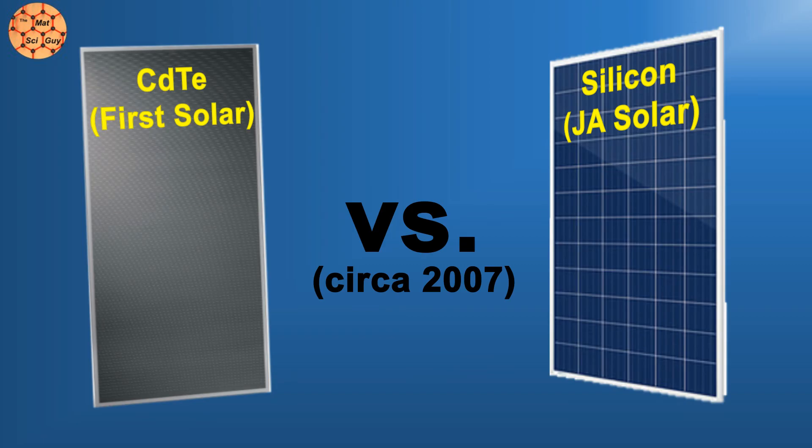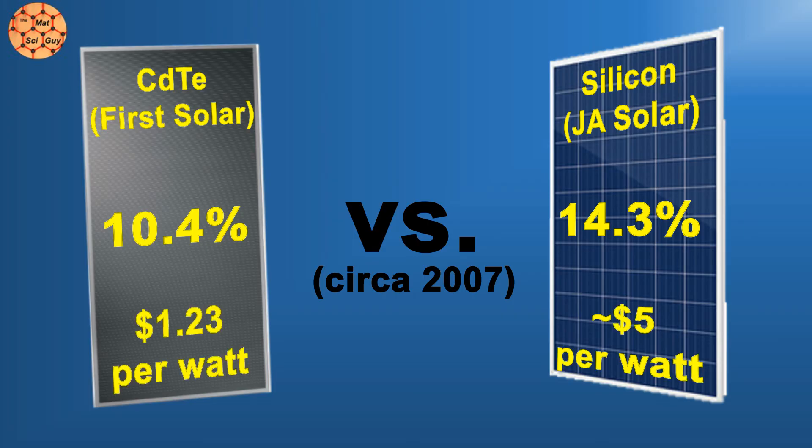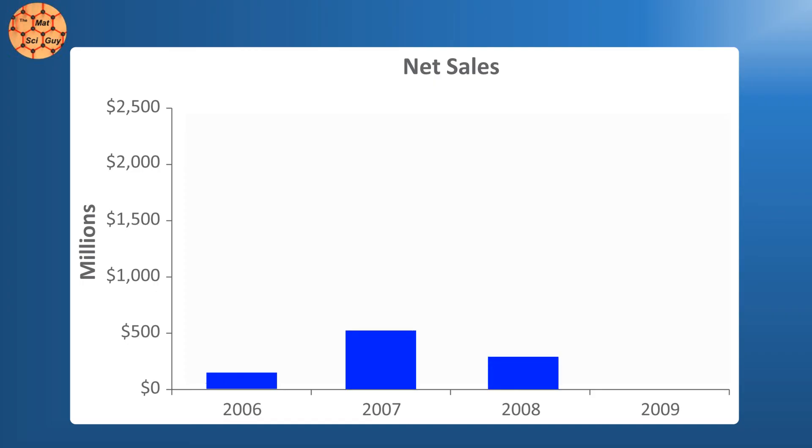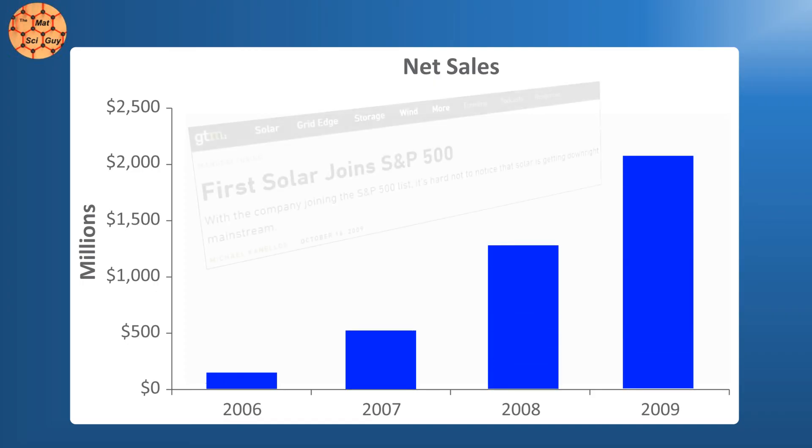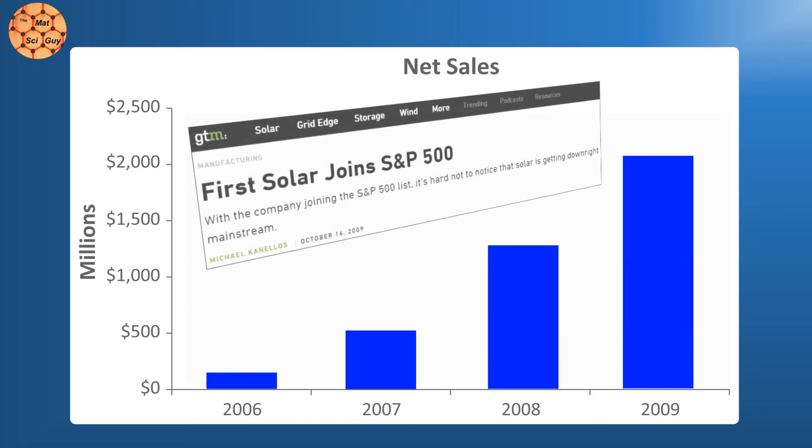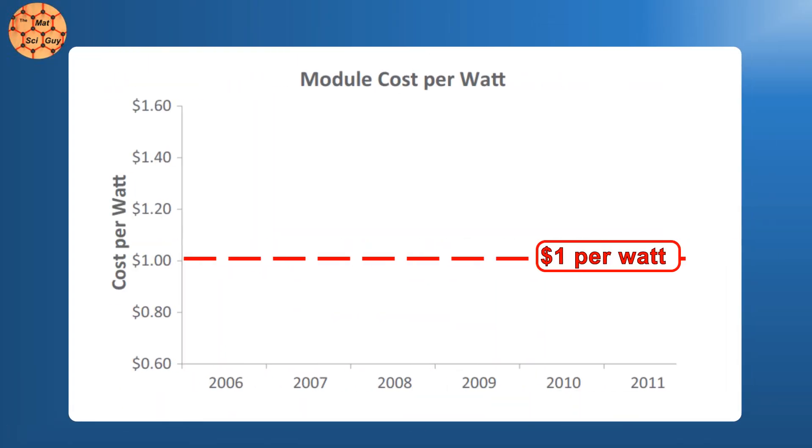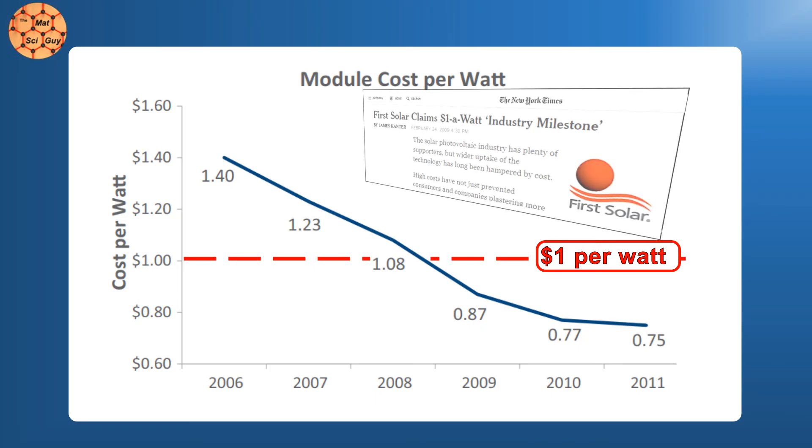In the beginning, First Solar's panels didn't match the efficiency of silicon ones, but they didn't need to. The cost advantages allowed them to make significant headway into the market, and their business boomed in the following years, passing numerous solar landmarks along the way. In 2009, they became the first solar company in the world to cross the $1 per watt threshold, a number long considered a benchmark in the solar industry.